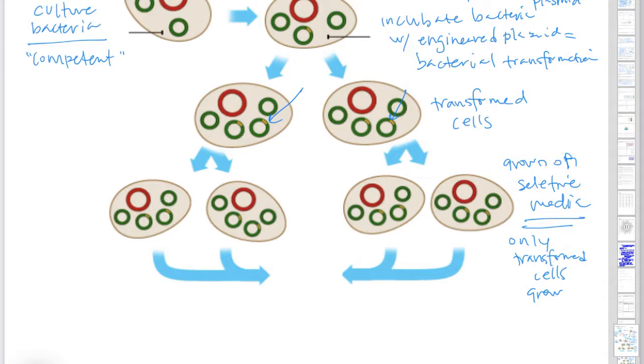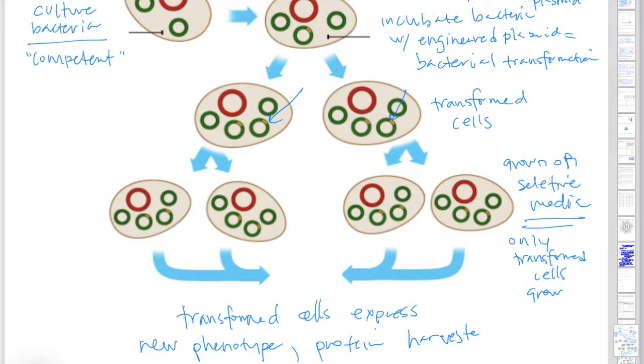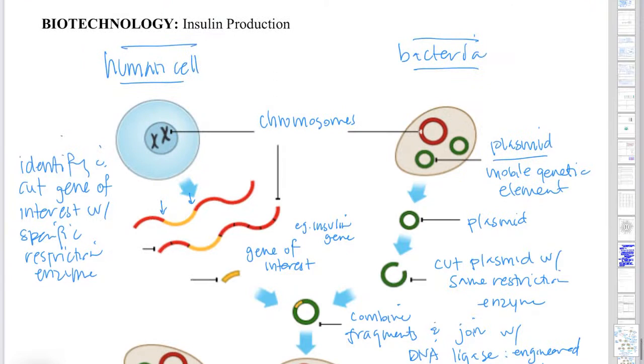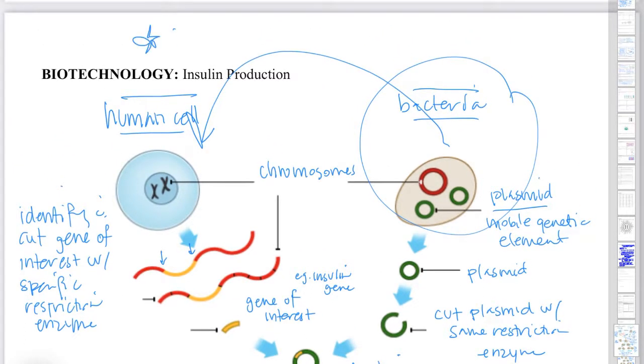Then when you culture those cells, every time there's a new cell that's made, it's going to have the engineered plasmid in it. And so we call those transformed cells and they will express the new phenotype. And then in the case of insulin, the protein can be harvested. So in this particular case, the cells are going to produce insulin. And so that's how we produce, that's how we have engineered bacteria cells to produce human insulin.